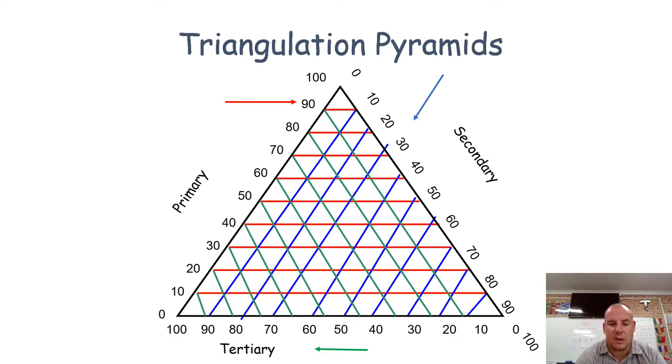We're looking at what percentage of people in a country are employed in the tertiary, primary, and secondary sectors. That's for this example. This graph can also be used for soil tests with three different types of soil, and a whole heap of other different things.